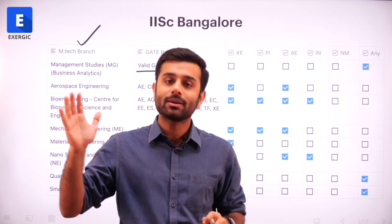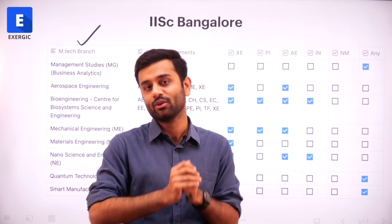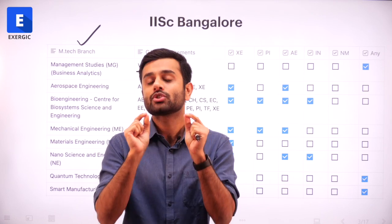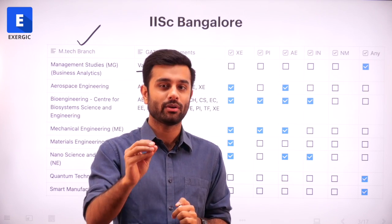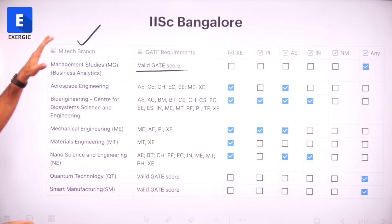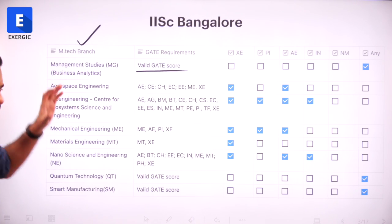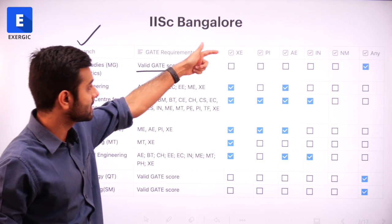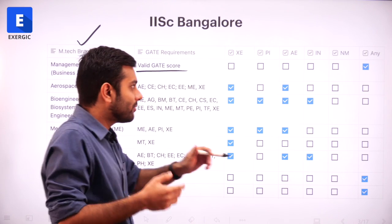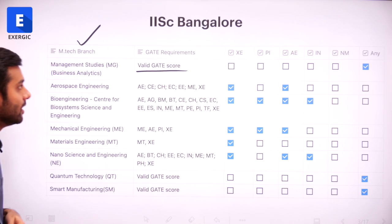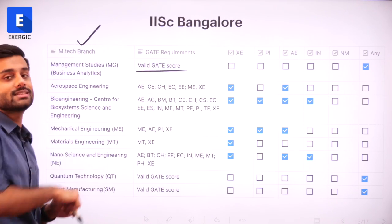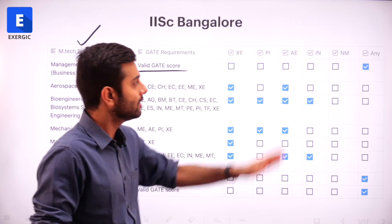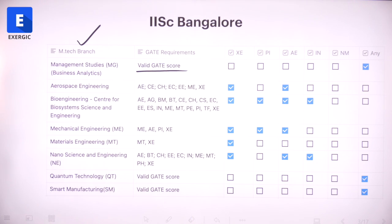Make sure you do not pass this video like a random general video. You must pause it, have a look at the table, and analyze. That should be the best way to decide what is the best second paper for you. For IISC Bangalore, you can apply in Aerospace Engineering from XE also, and obviously from AE. But there will be certain colleges or branches where only AE, only PI, or only XE will be eligible and no other.